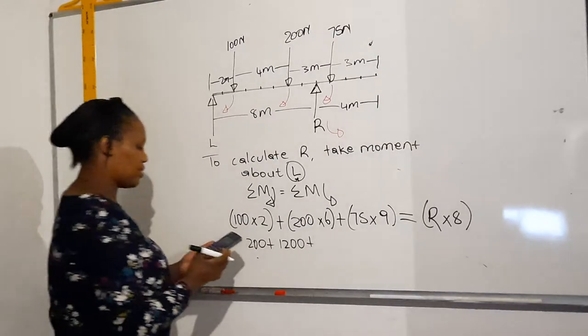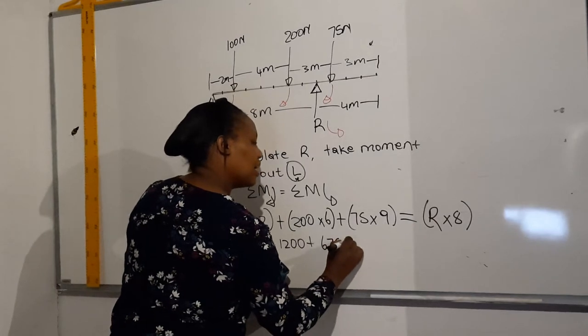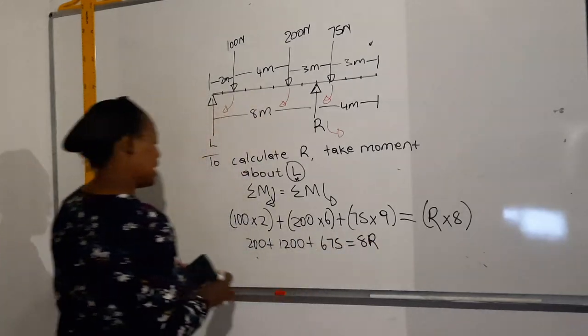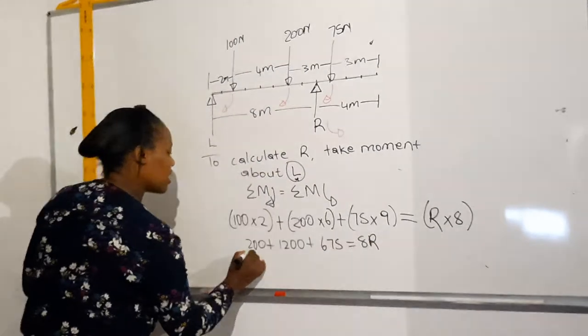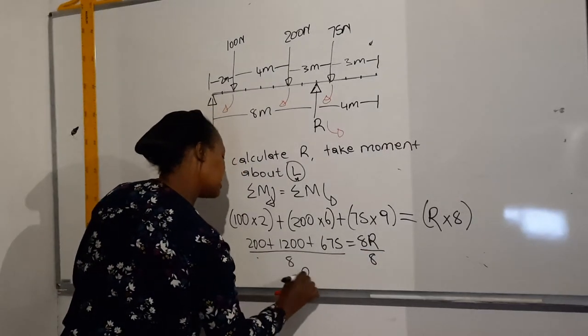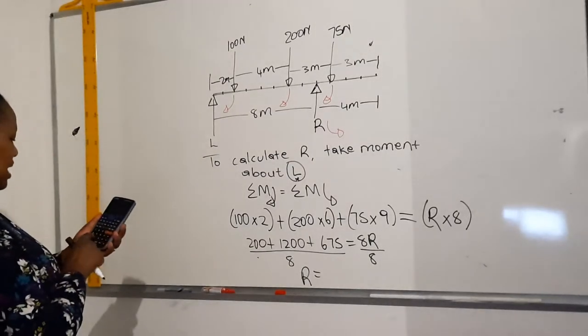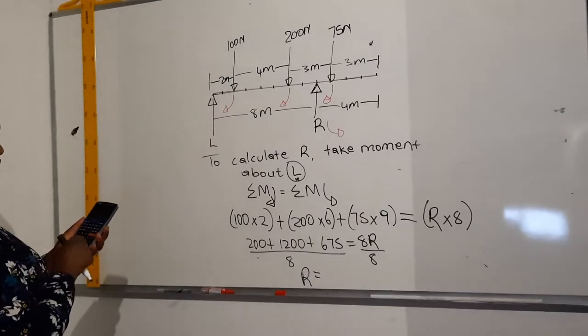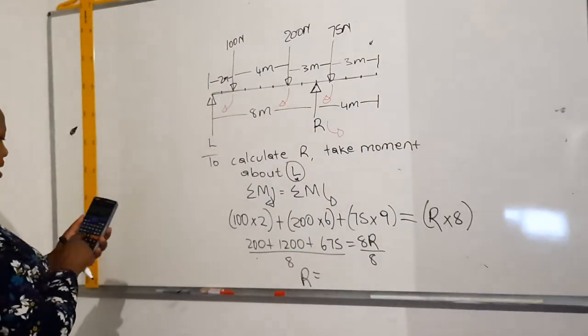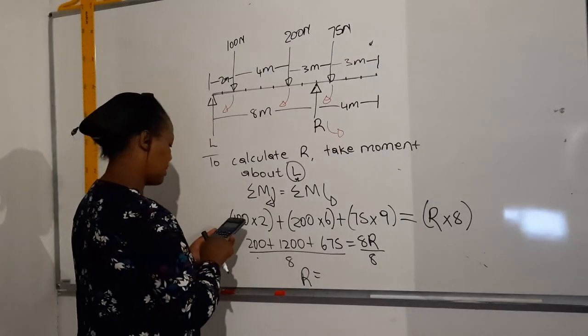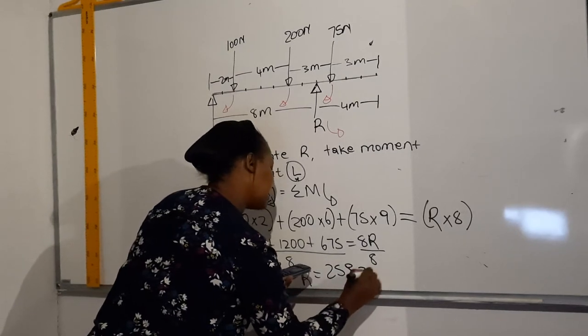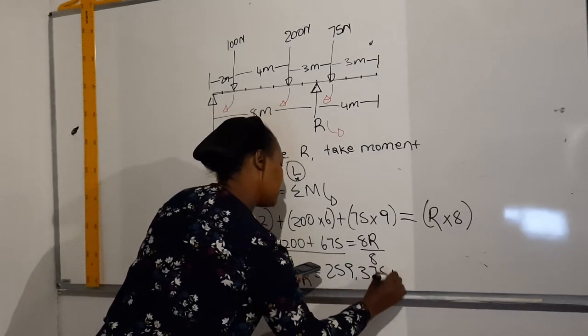Then we do the math. We add it all up, divide by 8 both sides. Then R comes as, let's add that up quickly: 200 plus 1200 plus 675, all that divided by 8, it gives us 259.375 newtons.